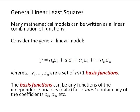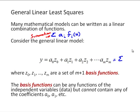The basic idea with general linear least squares is that many mathematical models can be written as a linear combination of functions. A linear combination means a summation of some constant a_i times some function f_i of x. In this formulation, we consider a general linear model where y equals a0 times z0 plus a1 times z1, etc. — a summation of a_i times z_i — and the z's are called basis functions.